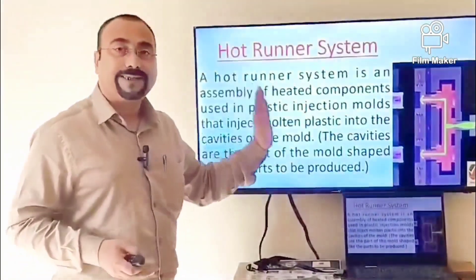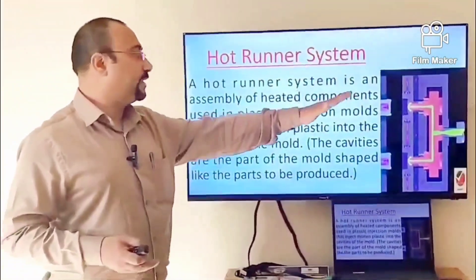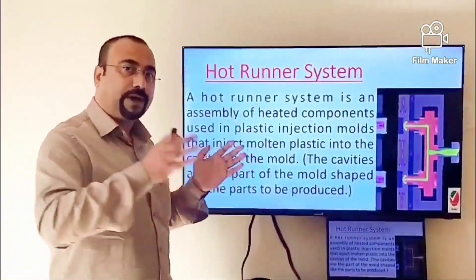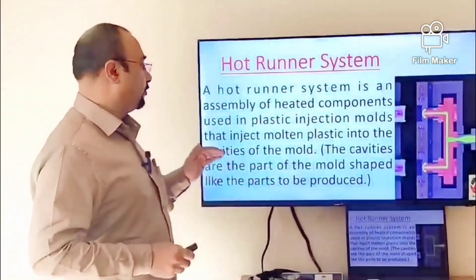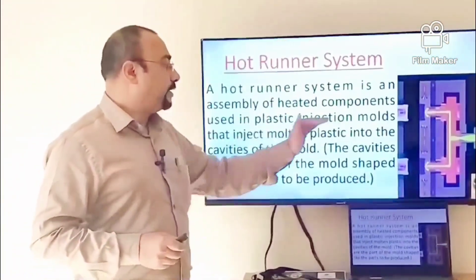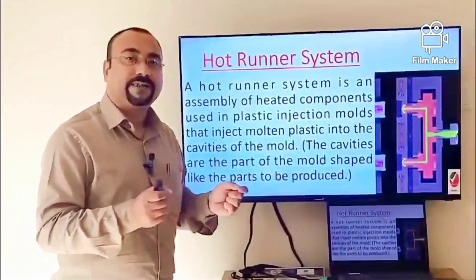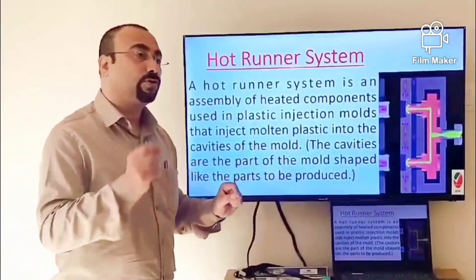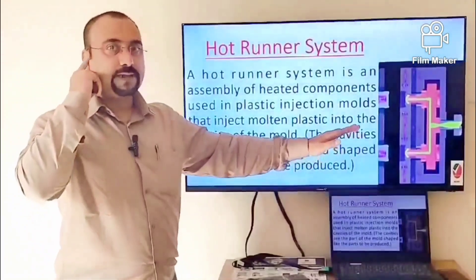The hot runner system is an assembly of heated components used in plastic injection molds. Be careful — it is not part of the injection machine, it is part of the injection mold. It guides the molten plastic to enter into the cavity through the gate.